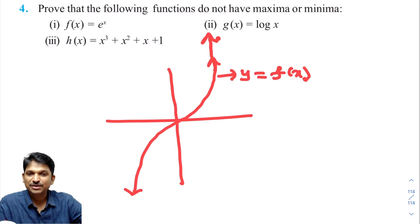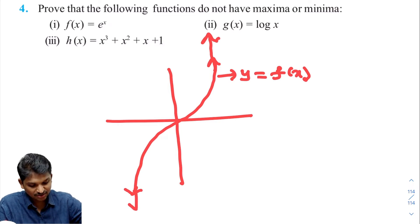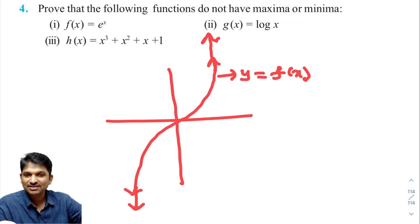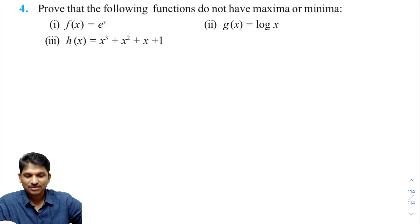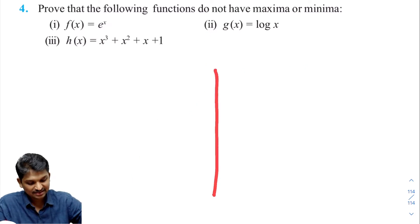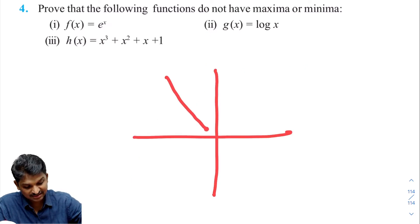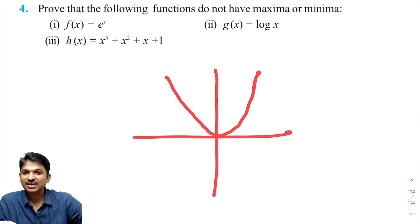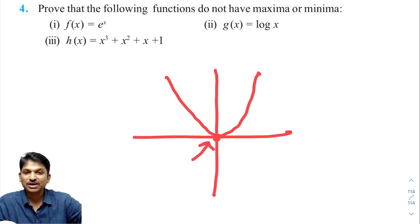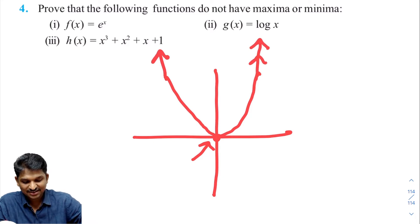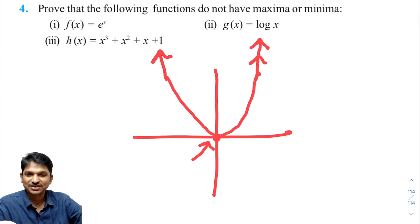We cannot say what is the maximum value, because this line is going further up. And you observe this — it is going down, so we cannot say what is the maximum or minimum value. Suppose the graph is like this: the function attains a minimum value at this point, but we cannot say what is the maximum value because it keeps going up.